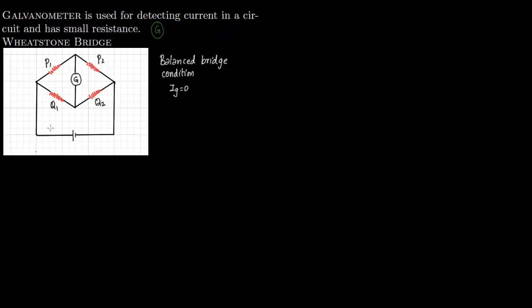A particular condition of the Wheatstone bridge is the balanced bridge condition. The balanced bridge condition simply says that the current through the galvanometer is zero. So this current shown here is zero under the balanced bridge condition.